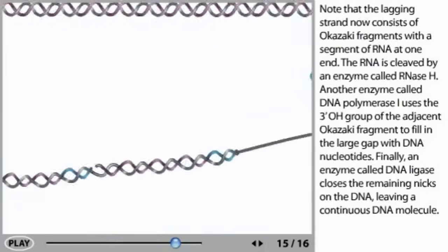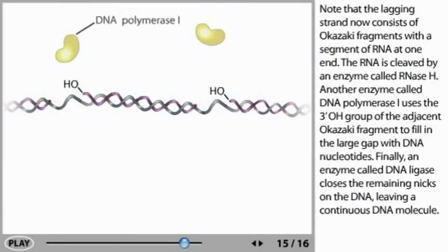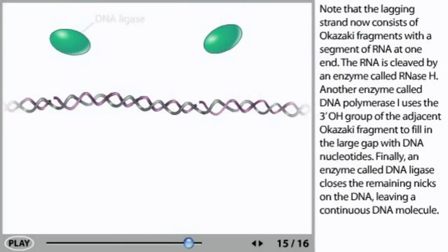Note that the lagging strand now consists of Okazaki fragments with a segment of RNA at one end. The RNA is cleaved by an enzyme called RNase H. Another enzyme called DNA polymerase I uses the 3' OH group of the adjacent Okazaki fragment to fill in the large gap with DNA nucleotides. Finally, an enzyme called DNA ligase closes the remaining nicks on the DNA, leaving a continuous DNA molecule.